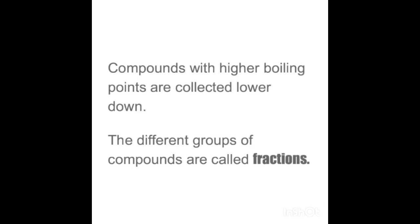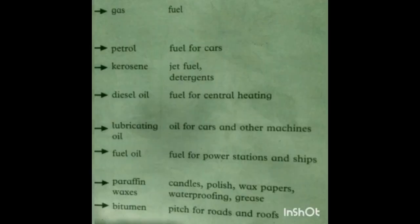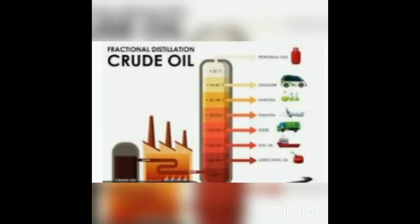The different groups of compounds collected are called fractions. These fractions include: gas (used as fuel), petrol (fuel for cars), kerosene (jet fuel, detergents), diesel oil (fuel for central heating), lubricating oil (for cars and machines), fuel oil (for power stations and ships), paraffin waxes (for candles, polish, wax paper, waterproofing), grease, and bitumen/pitch (for roads and roofs).